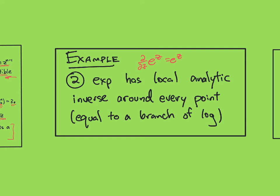So f always has a local analytic inverse around every point, which would be equal to a branch of the logarithm. And we've already shown that the exponential is injective on certain strips. So this is already known, but the inverse function theorem gives us another way to see it.